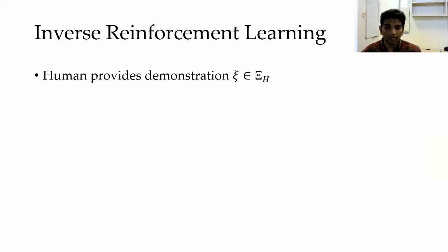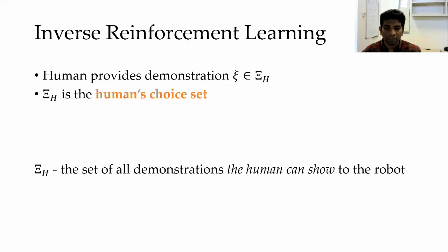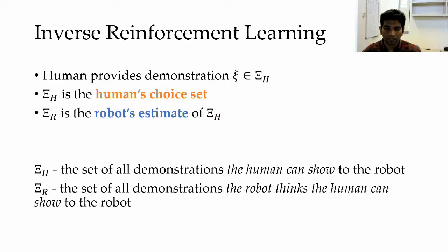In the inverse reinforcement learning paradigm, the human provides some demonstrations, ξi, from their choice set, ΞH. Here ΞH is the set of all possible demonstrations the human can show. However, the robot does not know what the human's choice set ΞH is, but instead it estimates this. Let's call this estimate ΞR.